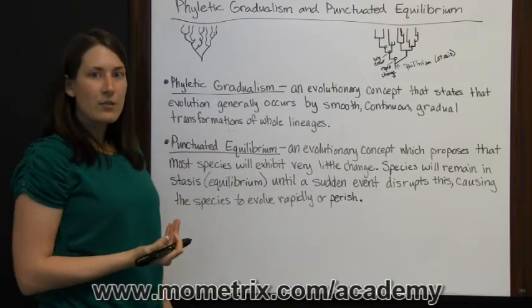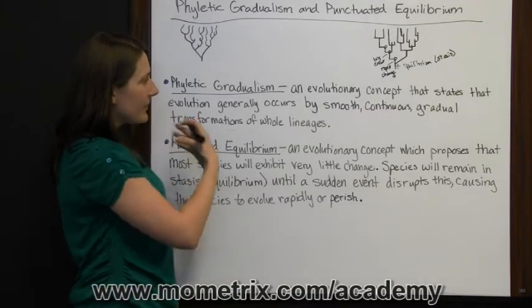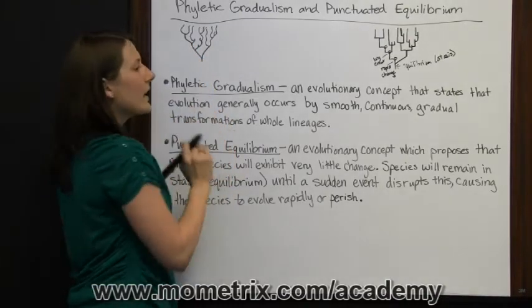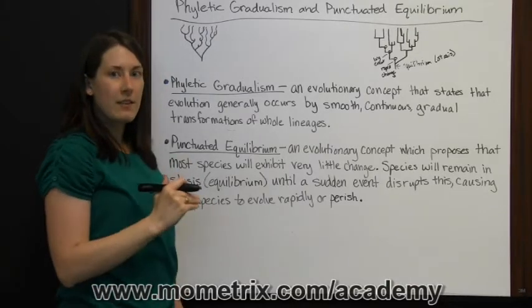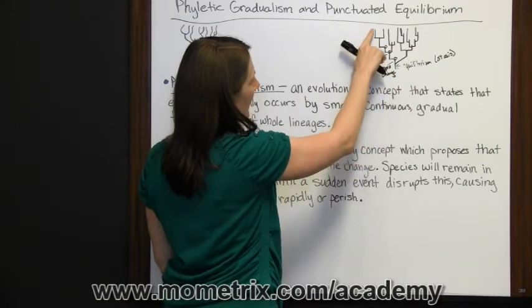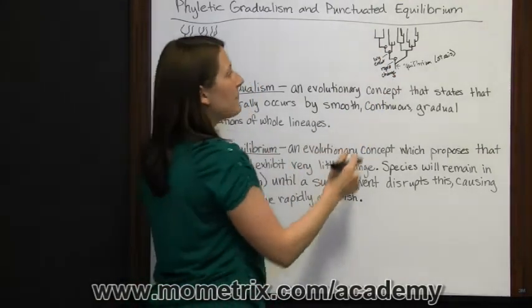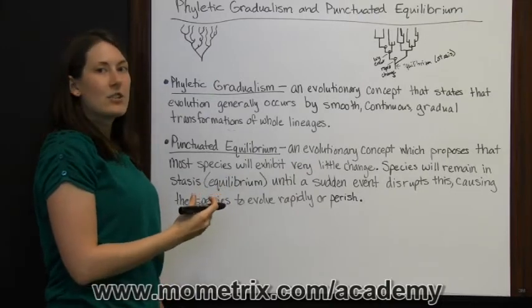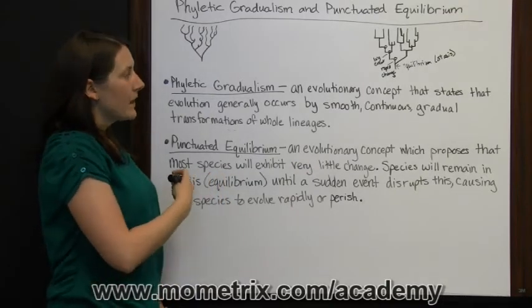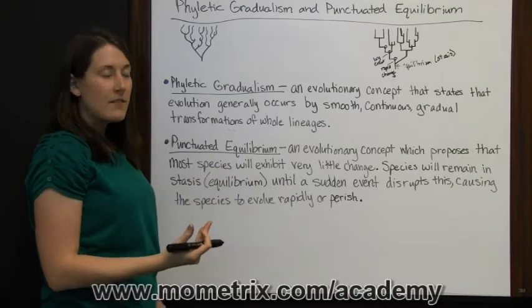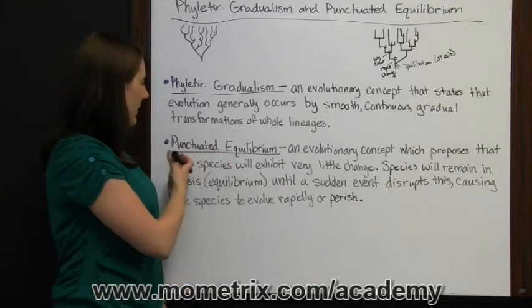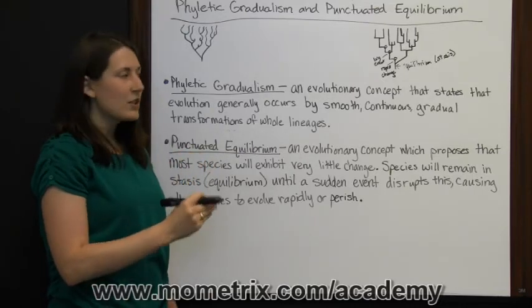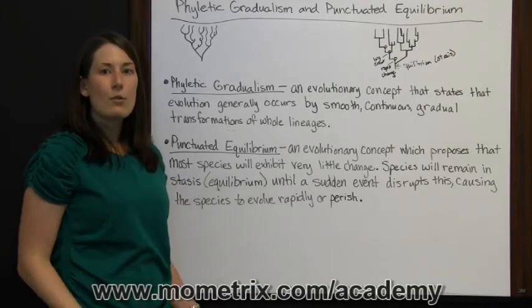Phyletic gradualism happens gradually, slowly over time. Events can happen, but it's not going to have as big of an impact because change is constantly, slowly happening to species. Punctuated equilibrium says everything stays the same — species remain pretty much the same throughout time, except when there's a big event and rapid change must take place for the species to continue. You can remember those by equilibrium, or stasis that stays the same for a long time and then is punctuated by rapid bursts of change, and gradualism — phyletic gradualism happening slowly, continually, gradually over time.